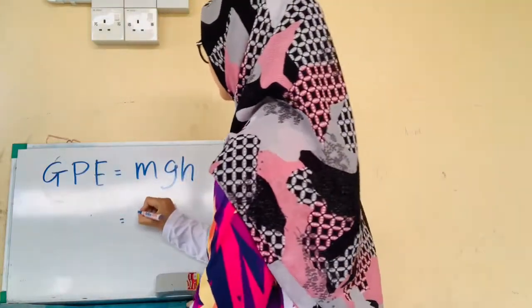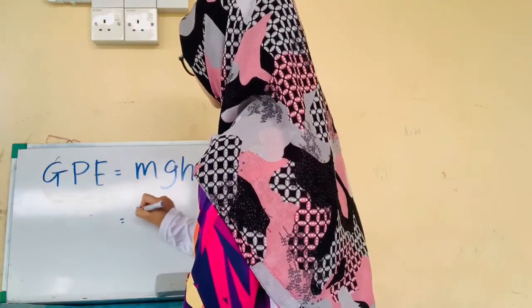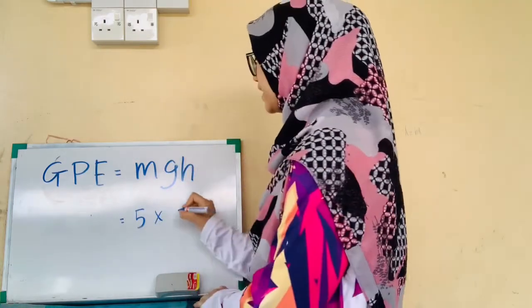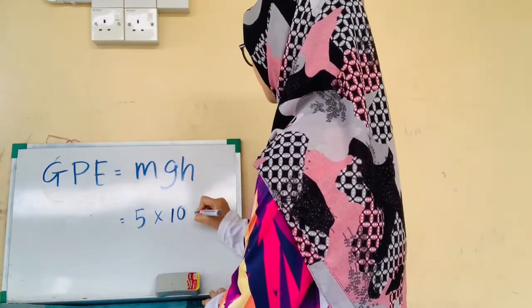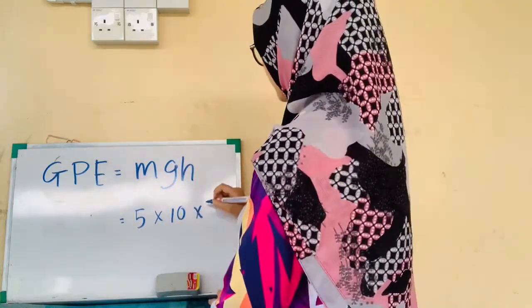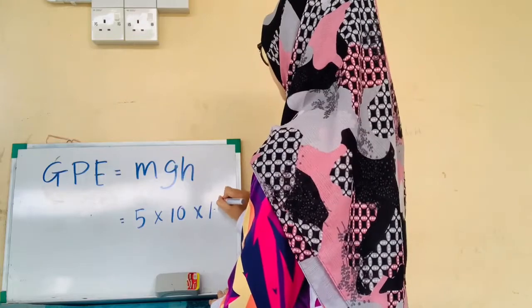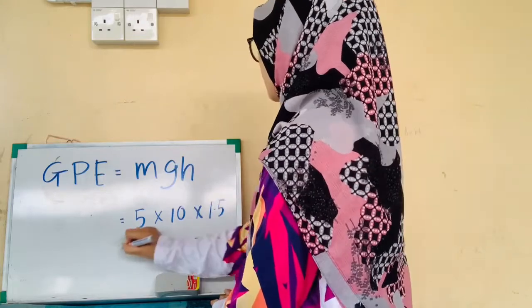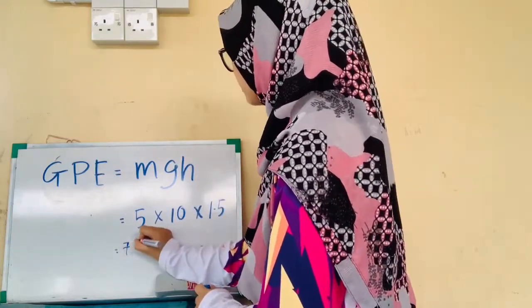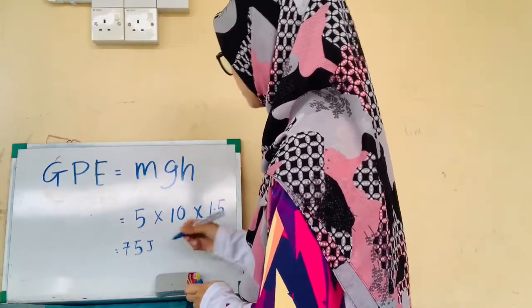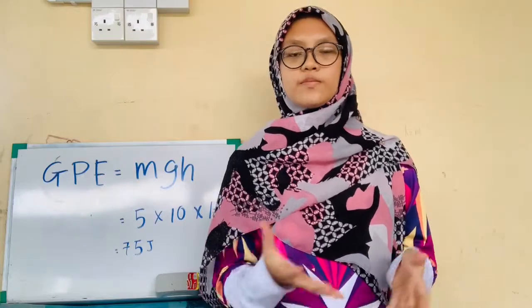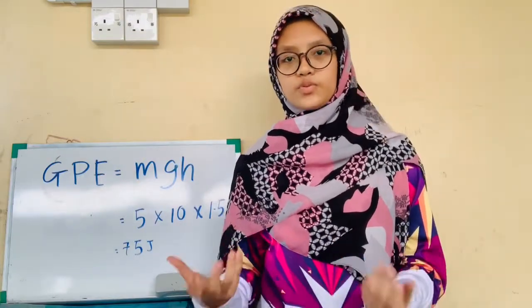To calculate GPE, we use GPE = MGH. The mass is 5 kg, g is 10 m/s², and the height is 1.5 meters. So GPE = 5 × 10 × 1.5 = 75 Joules. The energy required to lift the box is 75 Joules.